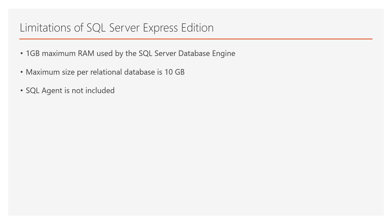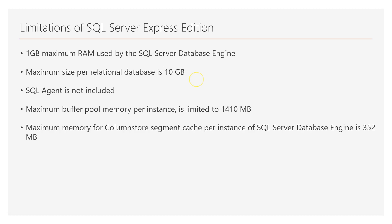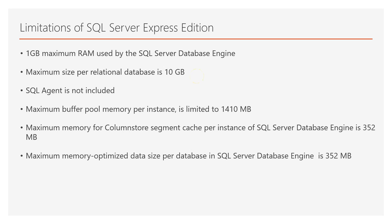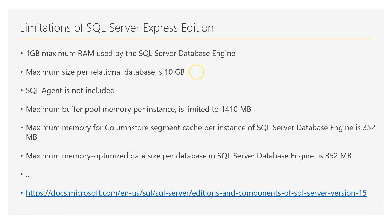Another important limitation is that SQL Agent is not included, meaning you cannot easily have automations in the sense of jobs that undertake certain tasks. There are ways of overcoming this using other approaches, for example Windows Scheduled Tasks. Another limitation is the maximum buffer pool memory per instance, limited to 1,410 MB, and the maximum memory for columnstore segment cache per instance is 352 MB. The maximum memory per database is also 352 MB. You can learn more by comparing all editions of SQL Server 2019 at the provided link.